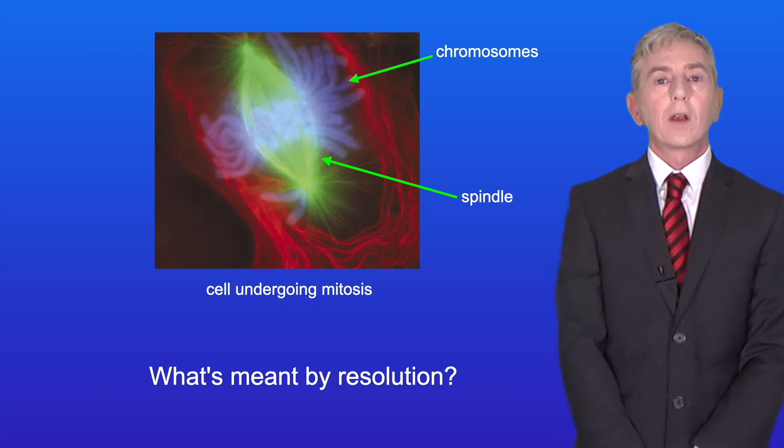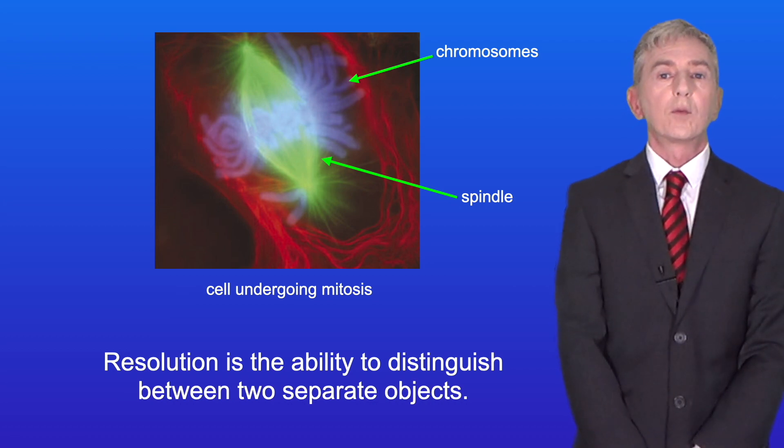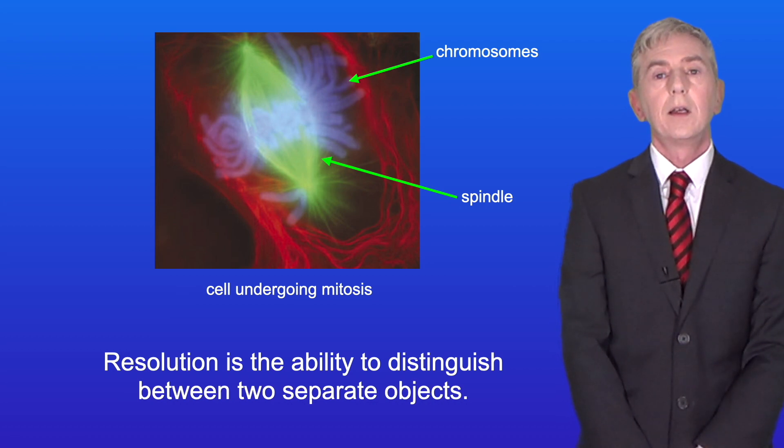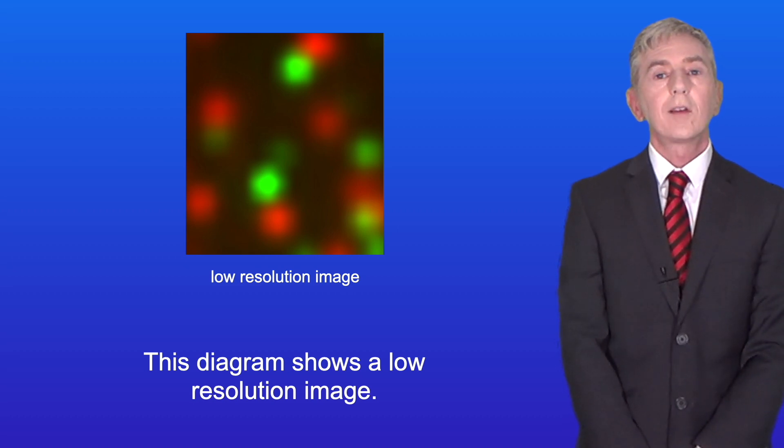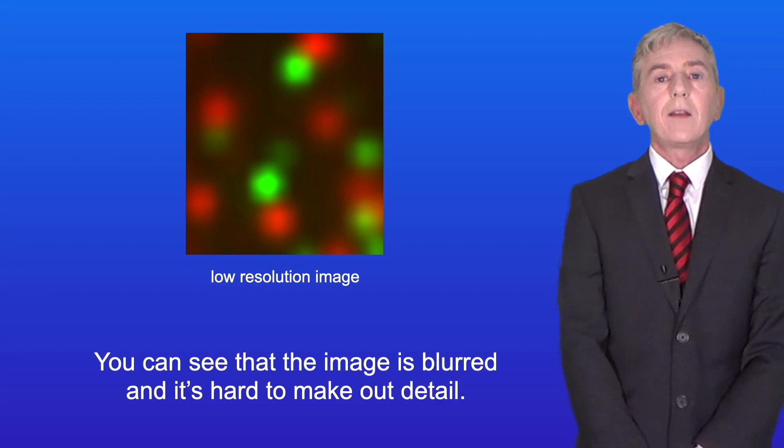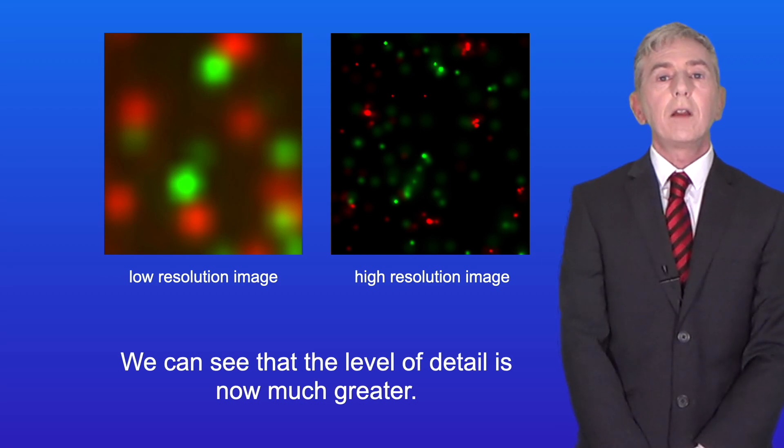So what's meant by resolution? Resolution is the ability to distinguish between two separate objects. Let's look at an example. This diagram shows a low resolution image. You can see that the image is blurred and it's hard to make out detail. Here's a high resolution picture of the same image and we can see that the level of detail is now much greater.